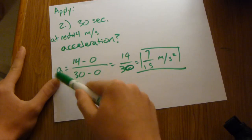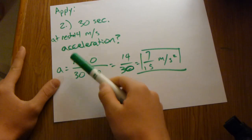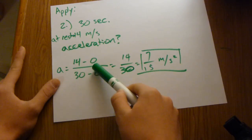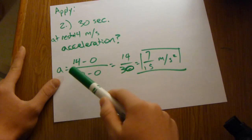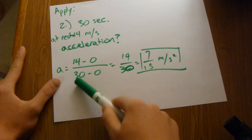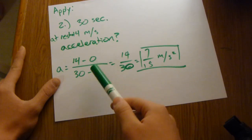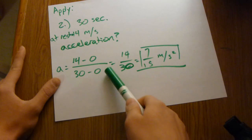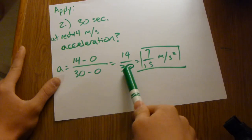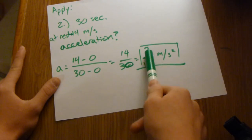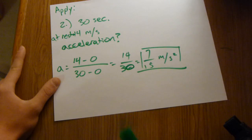For the second applied question, acceleration equals the change in velocity, so final minus initial: 14 minus 0, over the change in time, so 30 seconds minus 0. That equals 14 over 30, which is 7 over 15 meters per second squared.